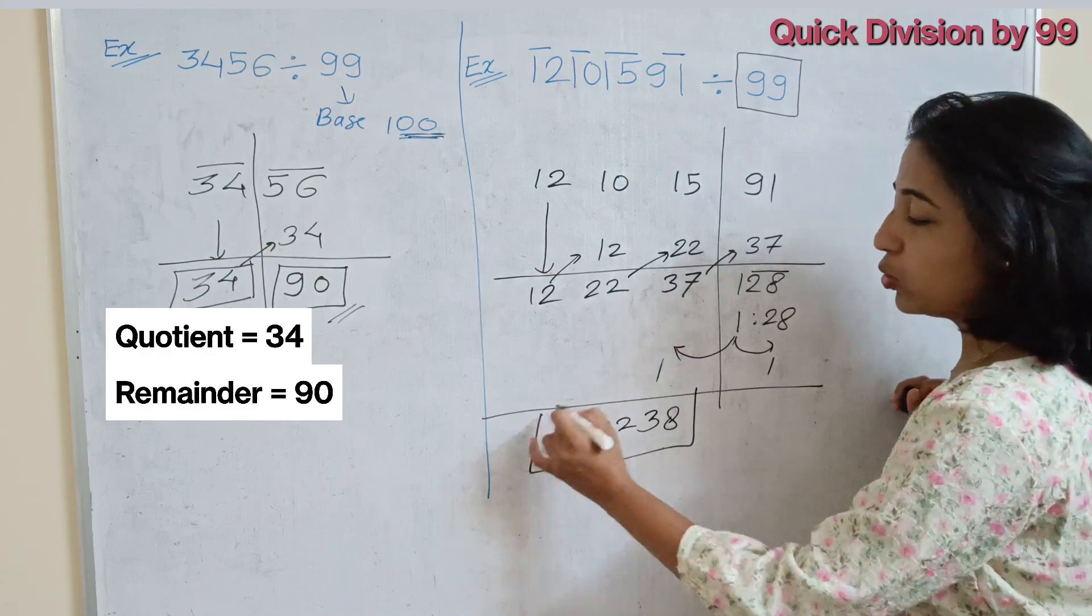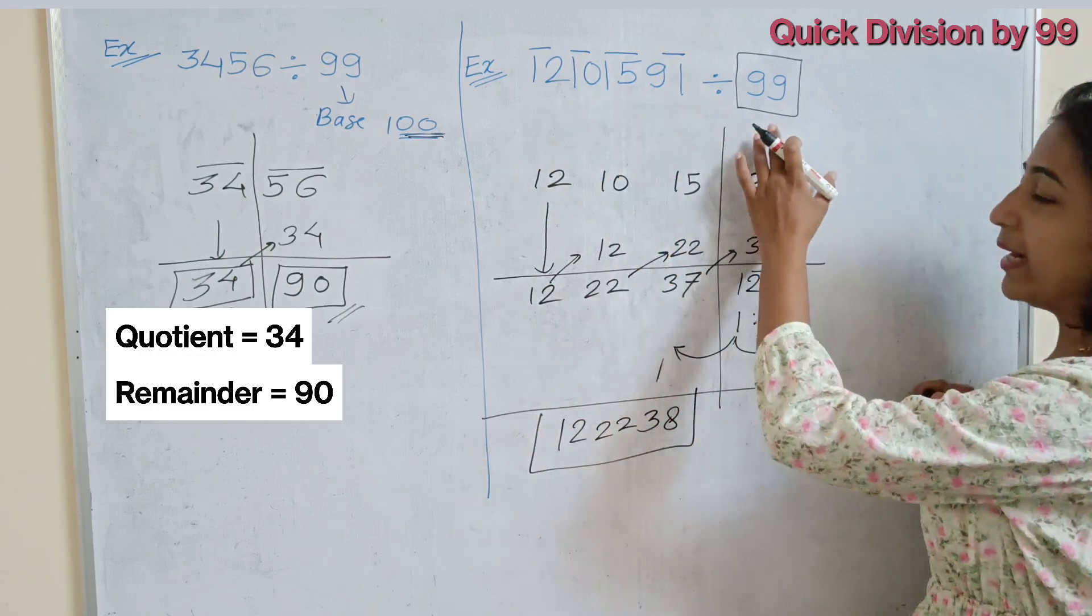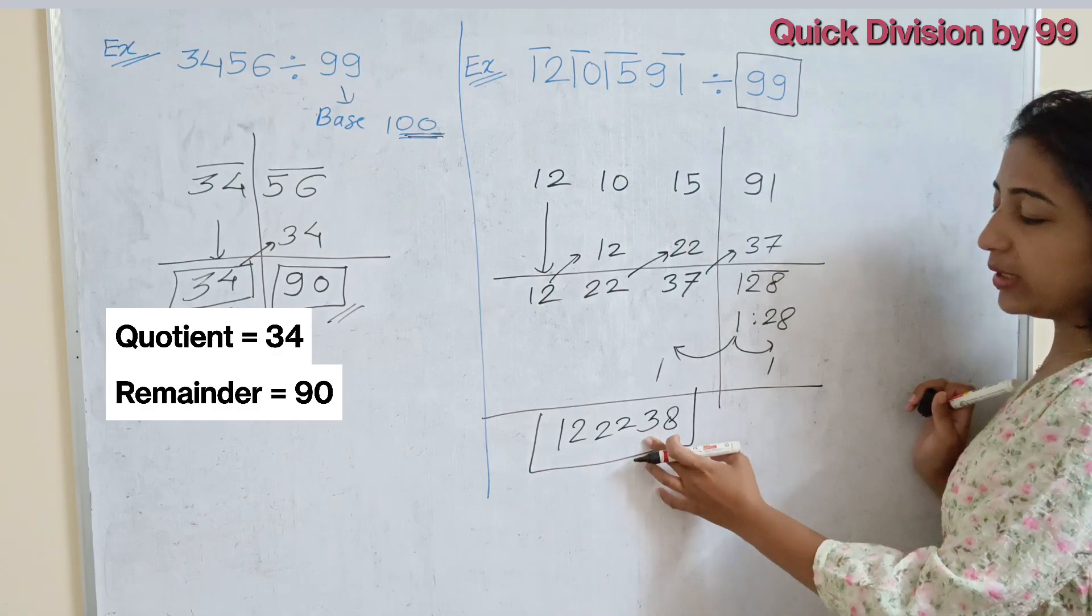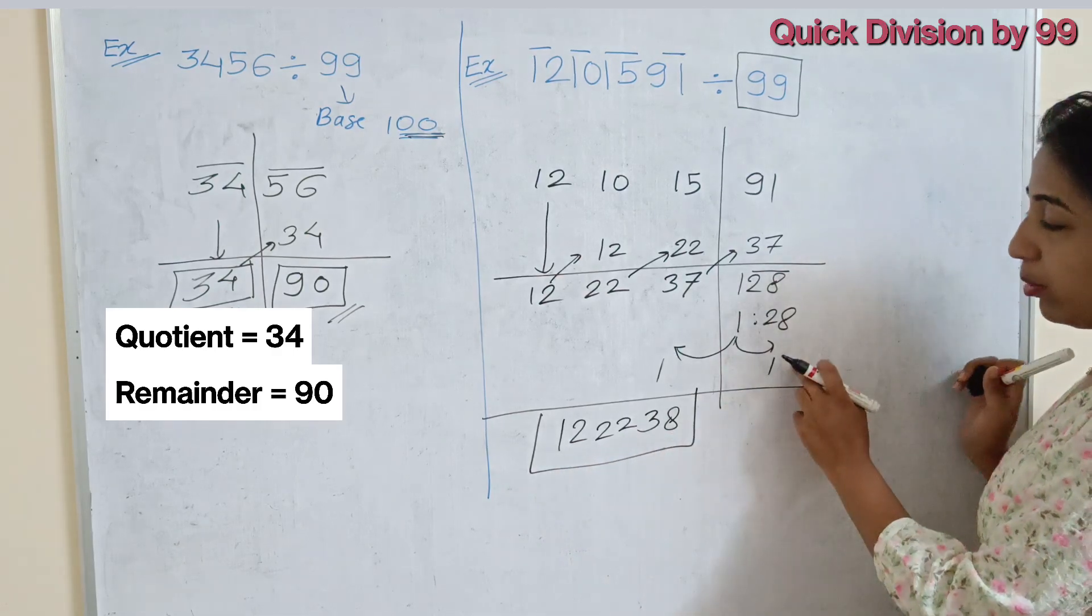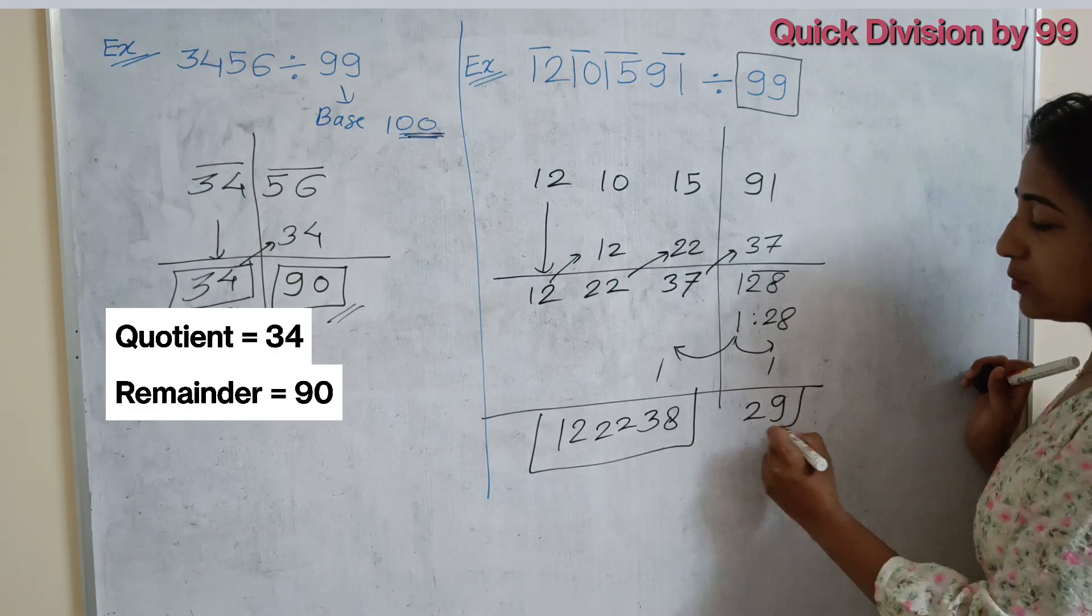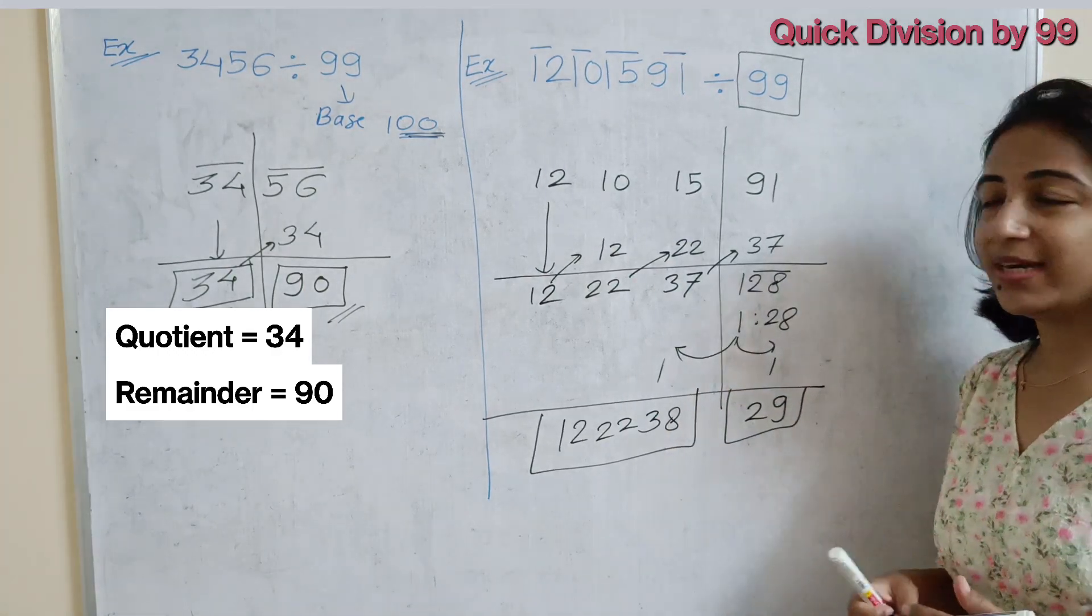It is nothing but the quotient. If we divide this number by 99, then quotient will be 12238. And what about the remainder? Here, 28 plus 1 is 29. This will be the remainder of our number.